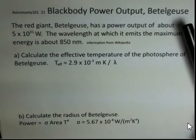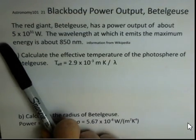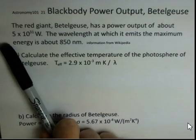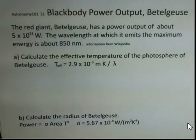Betelgeuse is a red giant star in the upper left shoulder of Orion, and the distance is very uncertain to the star. But if we measure the apparent brightness and we get a rough idea of the distance, it's been estimated that this red giant star is putting out 5 times 10 to the 31st joules per second, 5 times 10 to the 31st watts. And the wavelength at which the greatest amount of energy is being radiated from Betelgeuse is around 850 nanometers.